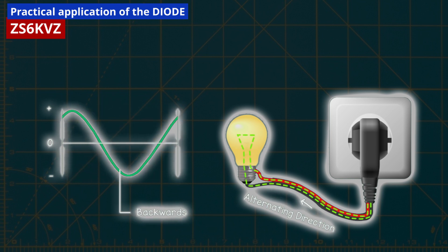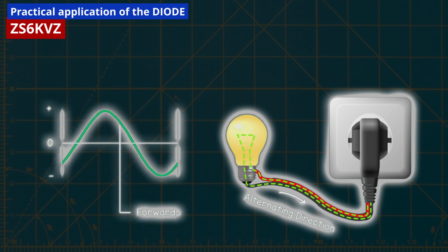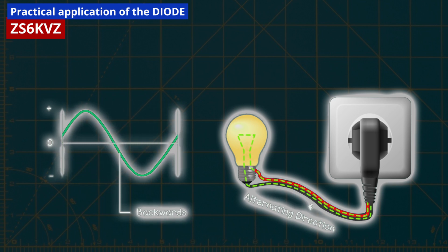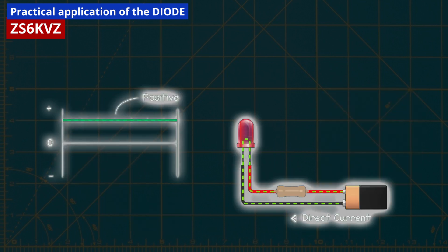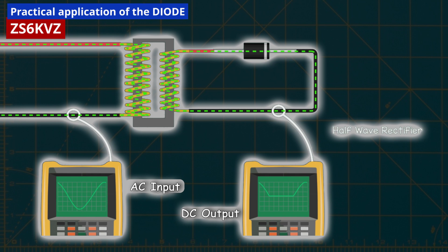AC, characterized by electron movement in both forward and backward directions, generates a sine wave with positive and negative halves. On the other hand, DC allows electron flow in only one direction, resulting in a flat line in the positive region. To achieve AC to DC conversion, we can connect the primary side of a transformer to an AC source and then attach the secondary side to a single diode. The diode permits only one half of the AC wave to pass through while blocking the current in the opposite direction.